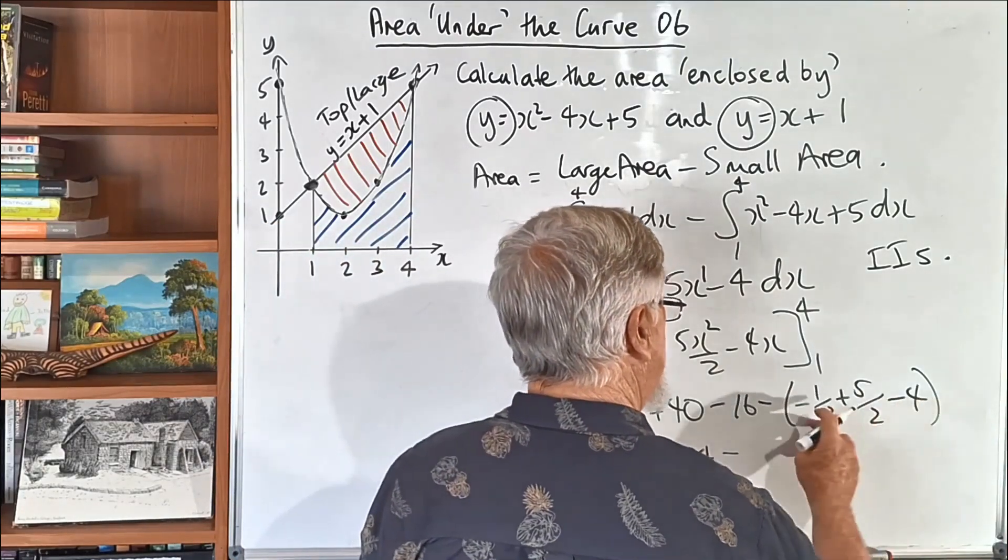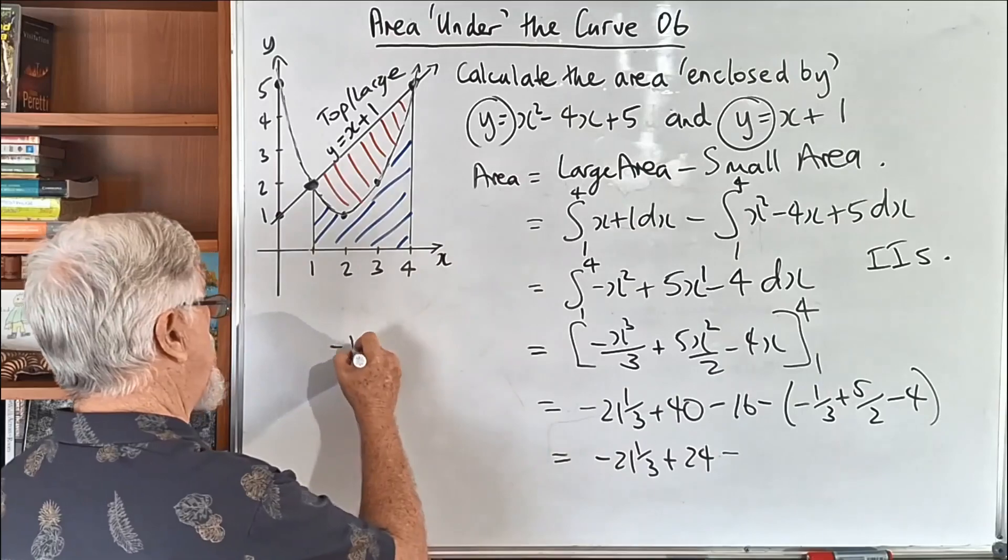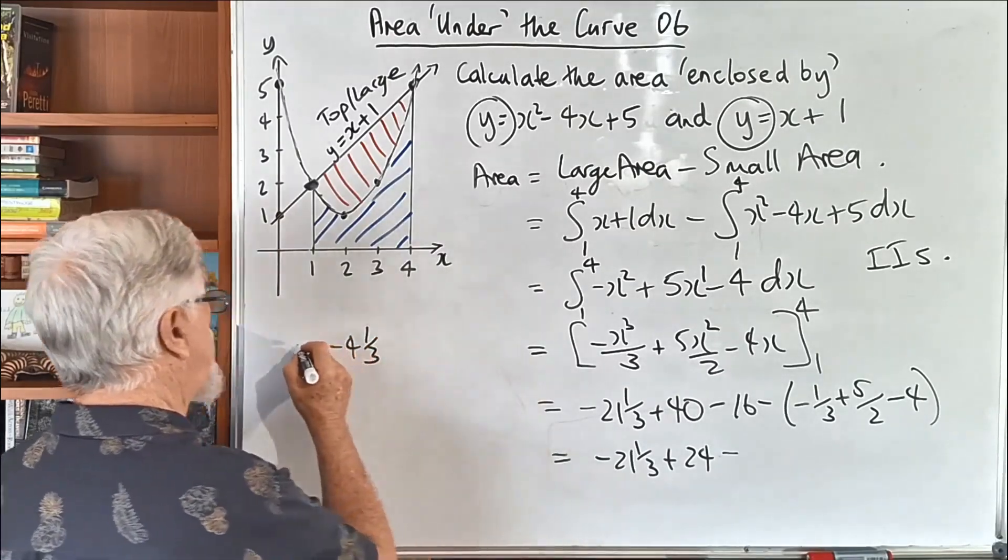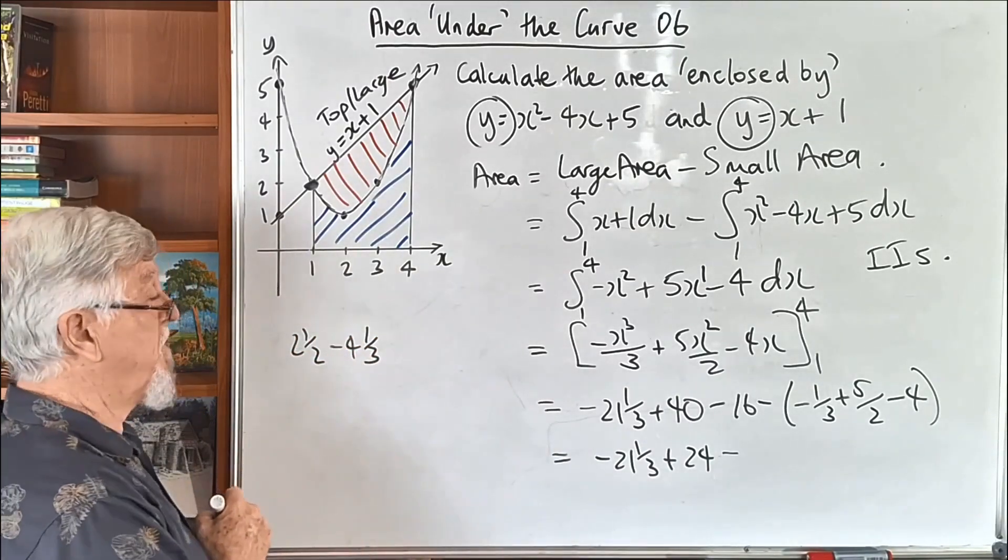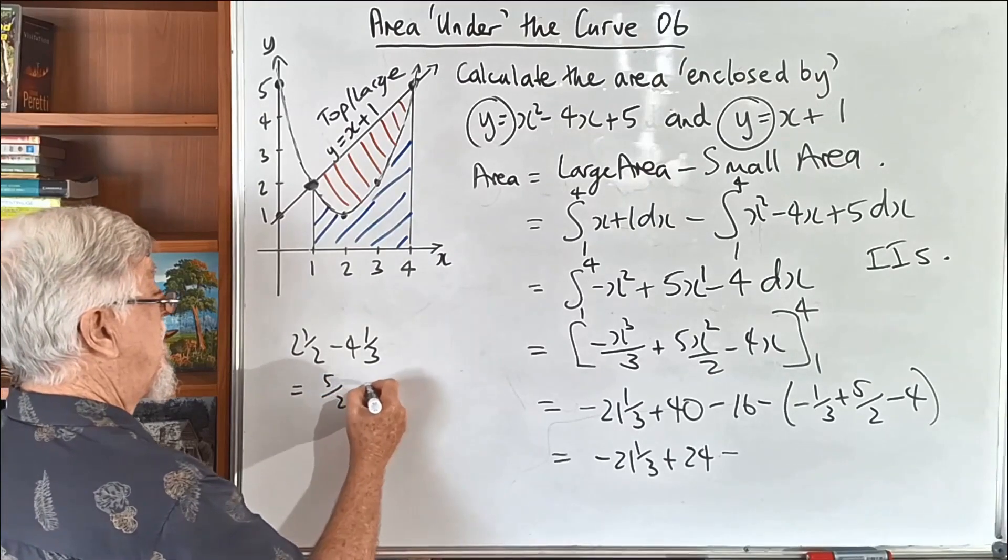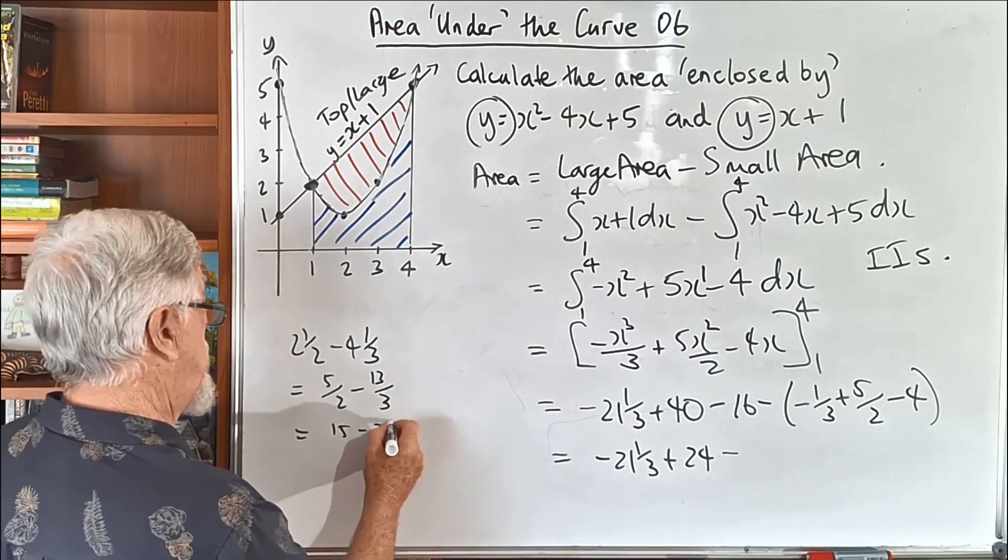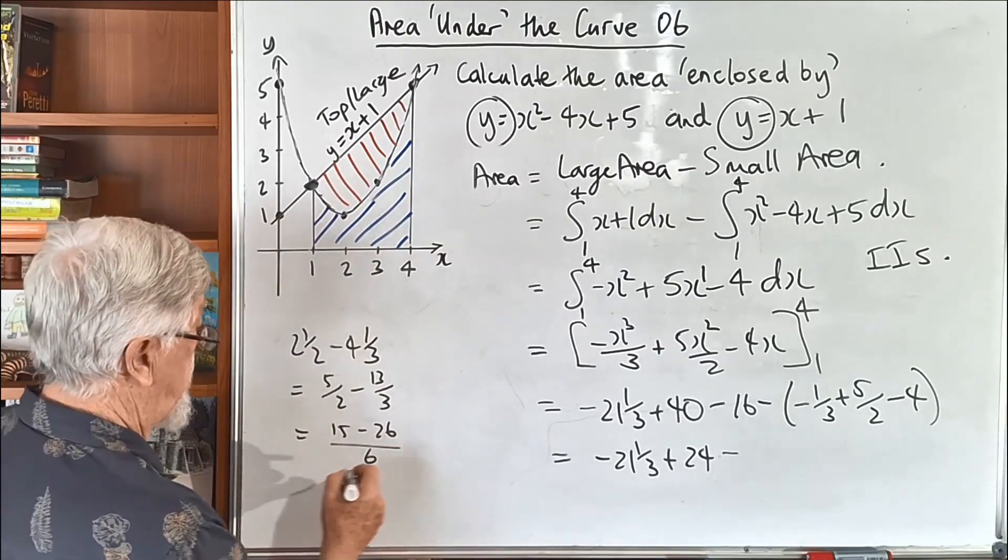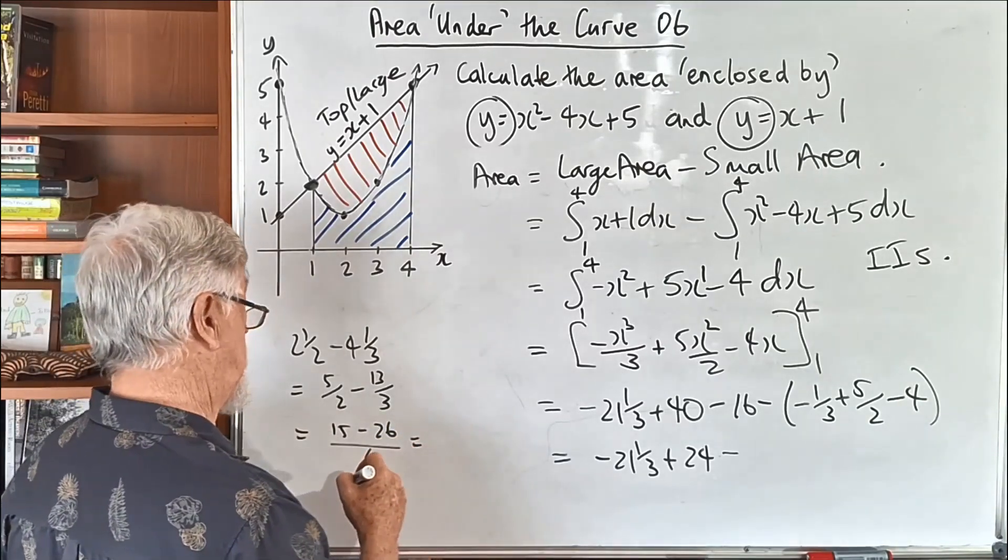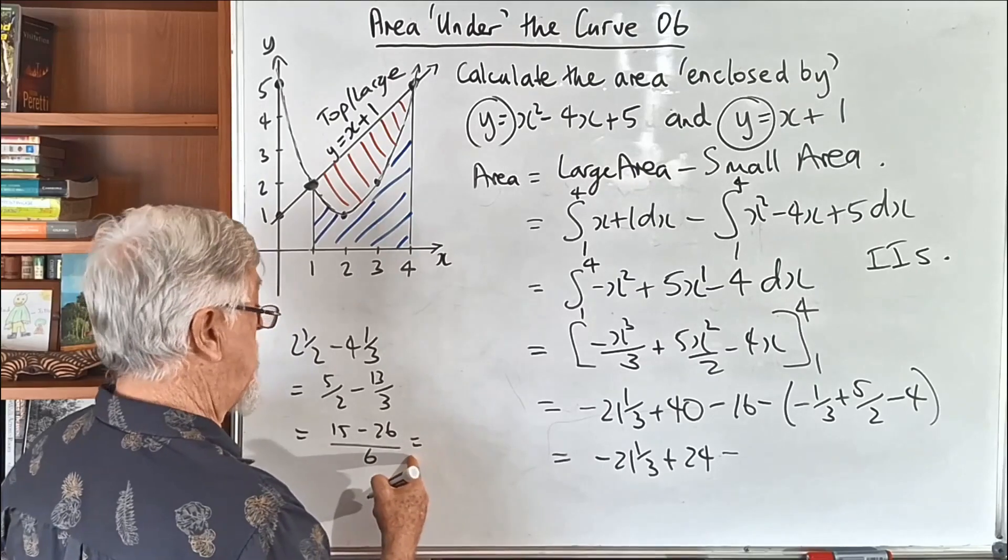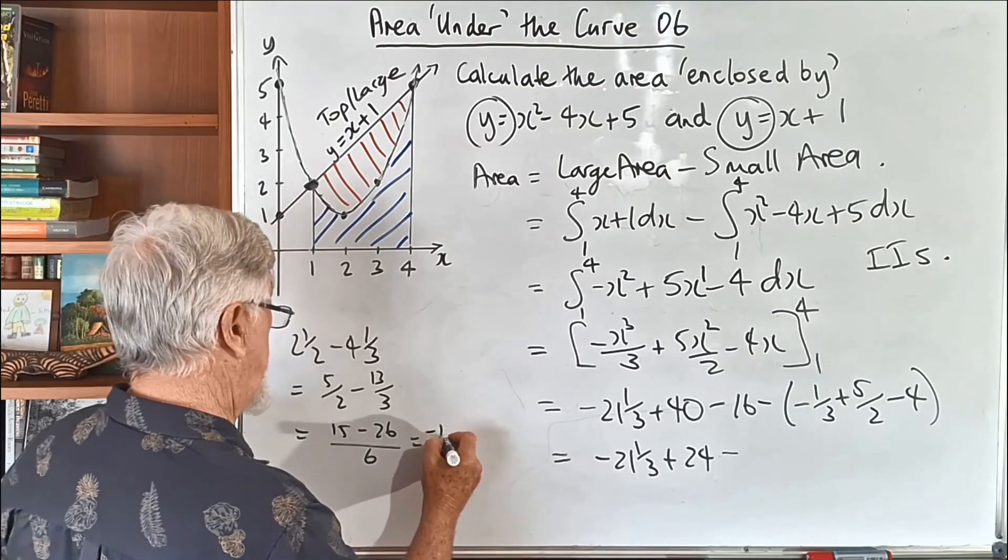My brain sees that as minus 4 and a third, and we've got 2 and a half, so it's 2 and a half minus 4 and a third, 5 on 2, minus 13 on 3, which is 15 minus 26 on 6, which is, this better work out nice, minus 11 on 6.